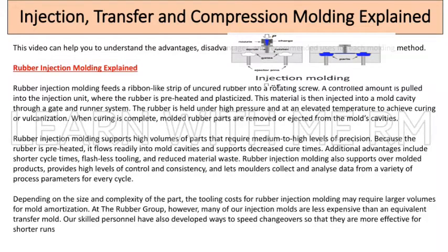Rubber injection molding supports high volumes of parts that require medium to high levels of precision. Because the rubber is preheated, it flows readily into mold cavities and supports decreased cure times. Additional advantages include shorter cycle times, flash-less tooling, and reduced material waste.